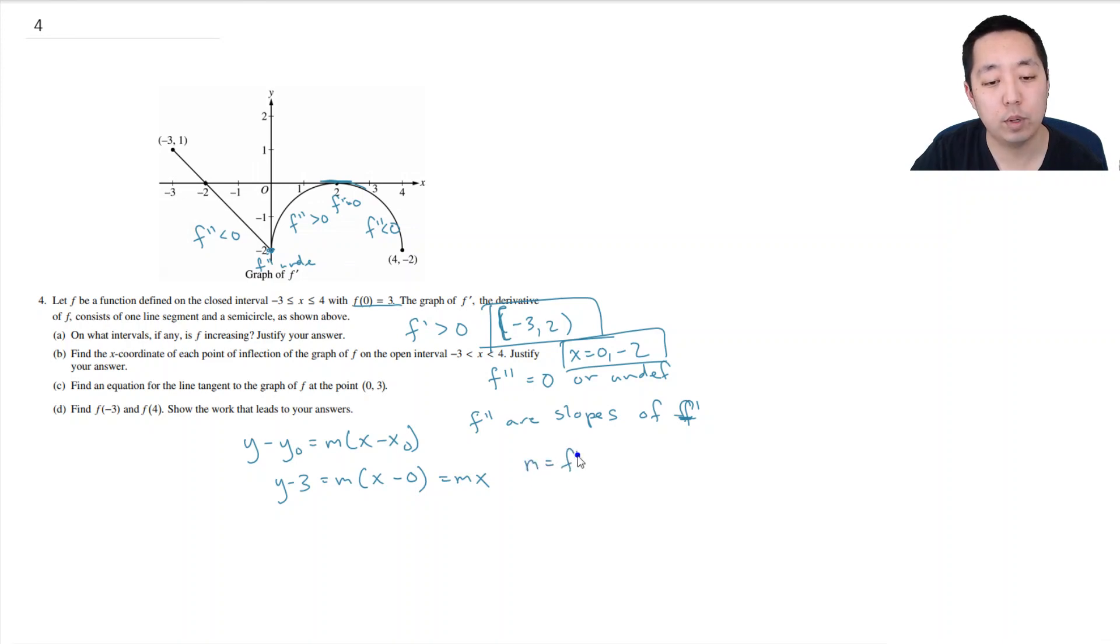m is equal to f prime at x equals 0. What's f prime at x equals 0? f prime is just this graph. So f prime at 0, that's negative 2. So then I have y minus 3 is equal to negative 2x or y is equal to negative 2x plus 3. You can leave it in this form or this form, it doesn't matter.